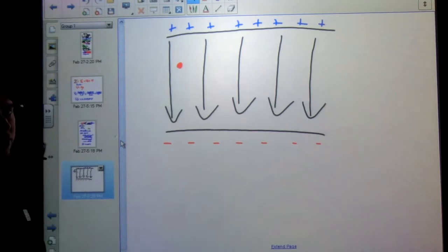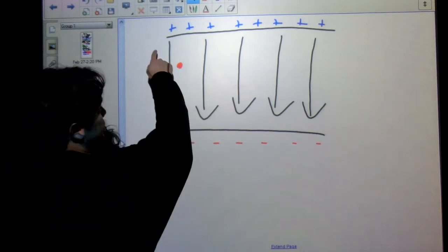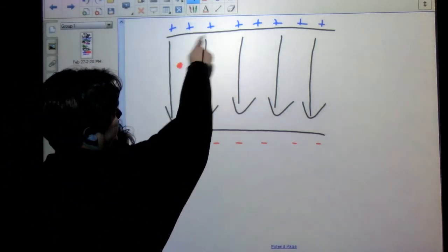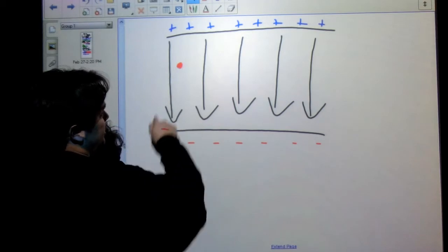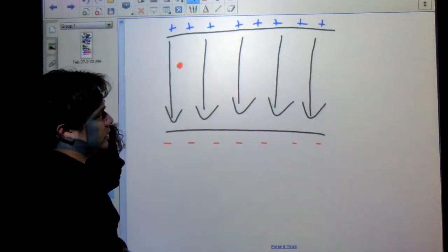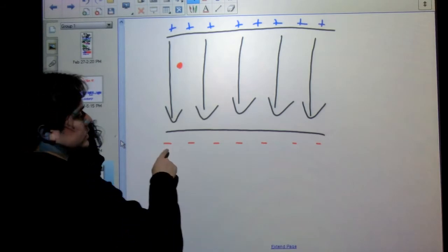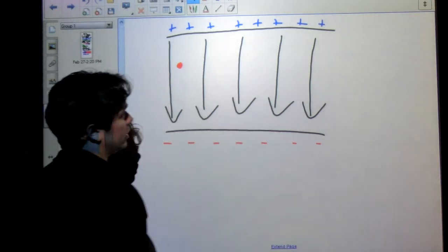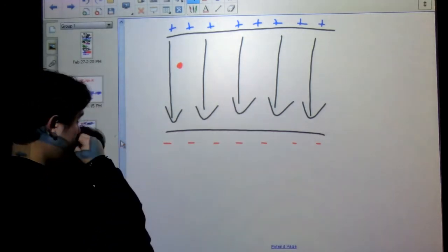Remember, in an electric field, the arrows always point in the direction that a positive charge will go. So a positive charge would try and get away from these positive charges up here and would be attracted to these negatives. That's why the electric field is pointed down like that.